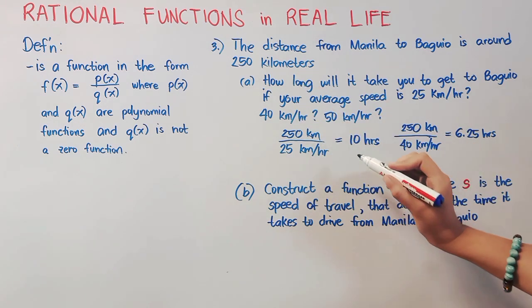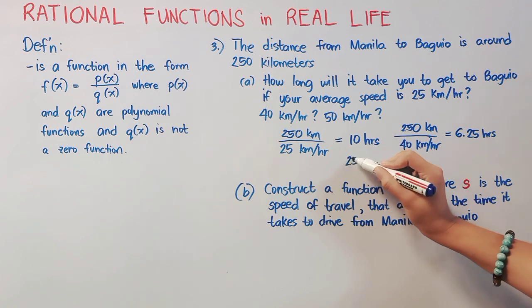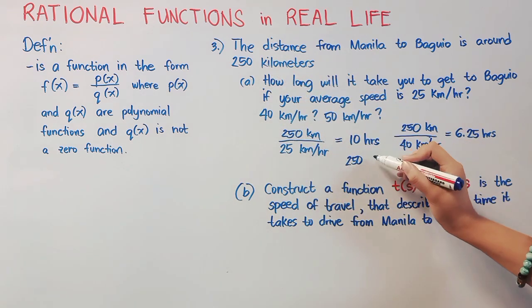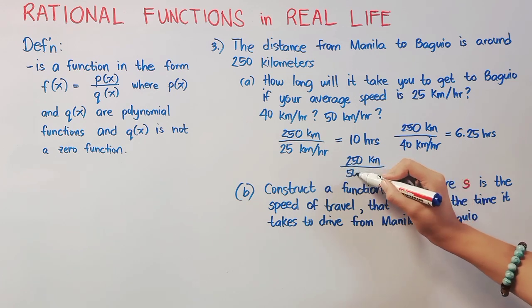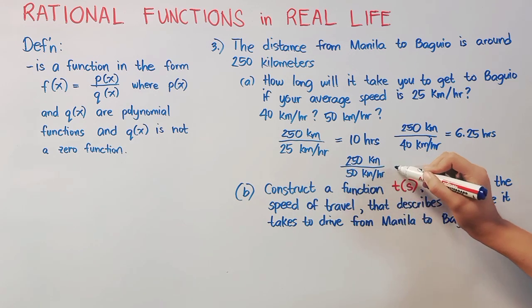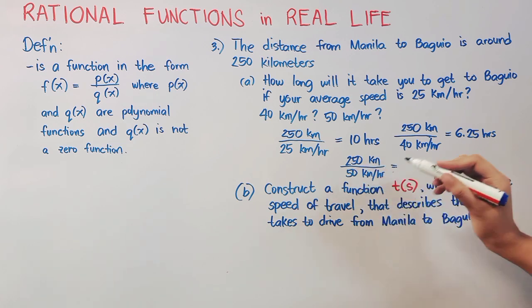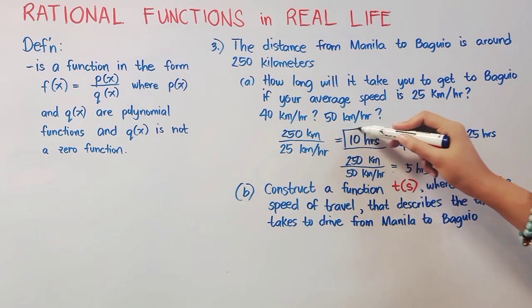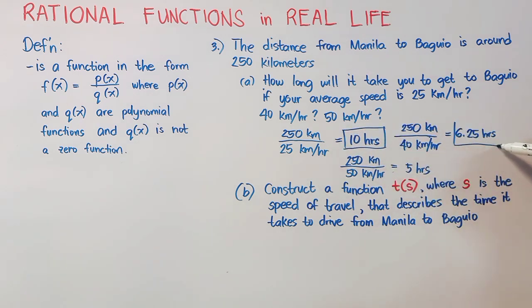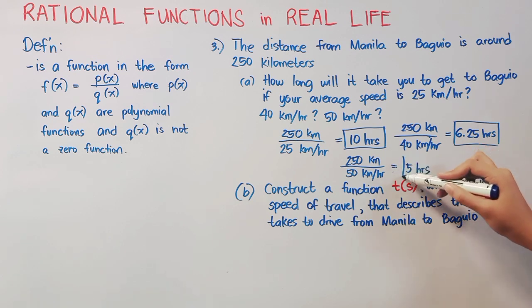Next is 50 kilometers per hour. Doing the same thing, we'll simply divide 250 kilometers to this time it's 50 kilometers per hour. That will give us a result of 5. Therefore, it will take us 5 hours to get to Baguio if our average speed is 50 kilometers per hour.